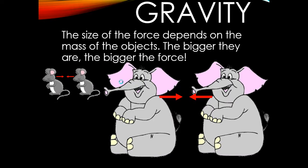Gravity is going to depend on the mass of the objects. The bigger they are, the bigger the force. So if you have two mice, that's going to be a smaller force than if you have two elephants.